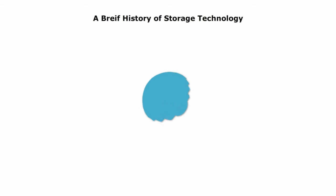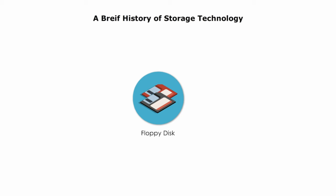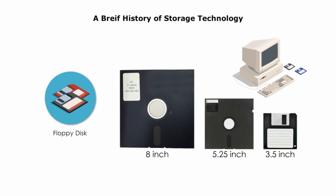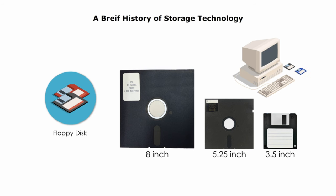Floppy disks were the next big thing from the 1970s to the 2000s. They were thin and flexible disks that you could carry around. They came in different sizes, but the most common were 3.5 inches and 5.25 inches across. They had very little storage space, usually less than 2 megabytes.